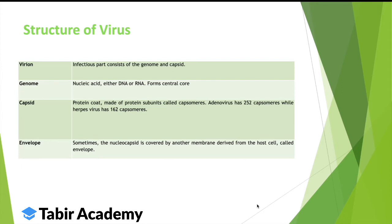The other component is the capsid. Capsid is simply a protein coat made of protein subunits. We call these subunits capsomers. Many capsomers accumulate to form a coat, which we call the capsid. Different viruses have different numbers of capsomers — adenovirus has 252 capsomers, but herpes virus only has 162.